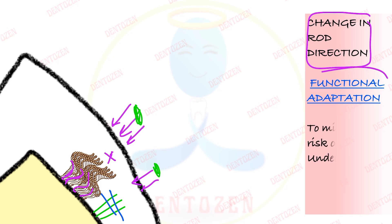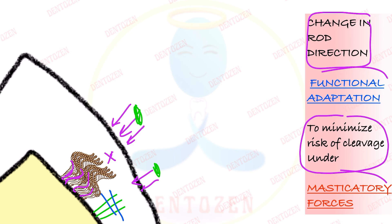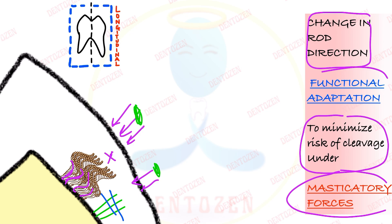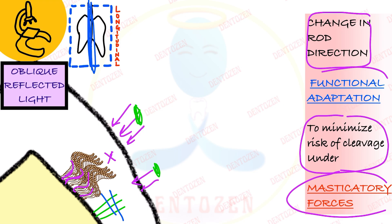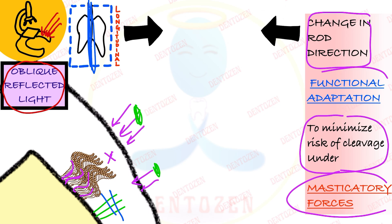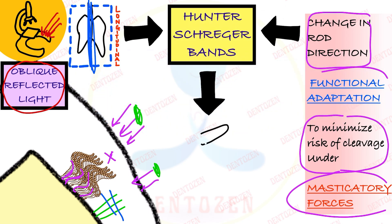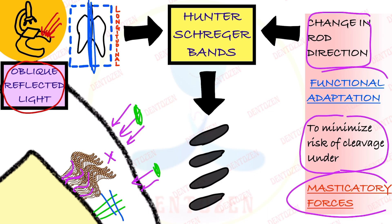So the change in rod direction is a functional adaptation to minimize the risk of fracture or cleavage under the pressure of masticatory forces. When this change in direction of enamel rods is observed under the microscope in a longitudinally cut ground section of the tooth — that is, when we cut the section along the long axis of the tooth and observe it under obliquely reflected light — we see what is known as Hunter-Schreger bands, that is alternating light and dark bands.